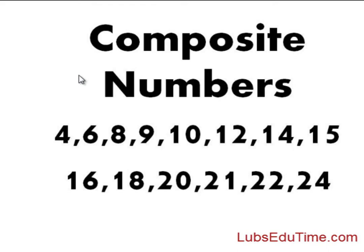More than two factors means more than just one and itself — there are more factors. It can clearly be seen that the set of composite numbers is equal to the set of rectangle numbers; that is, a composite number is a rectangle number.